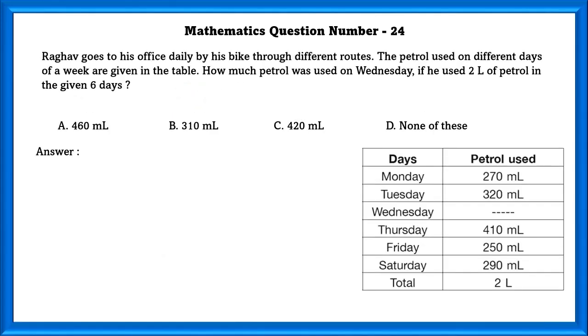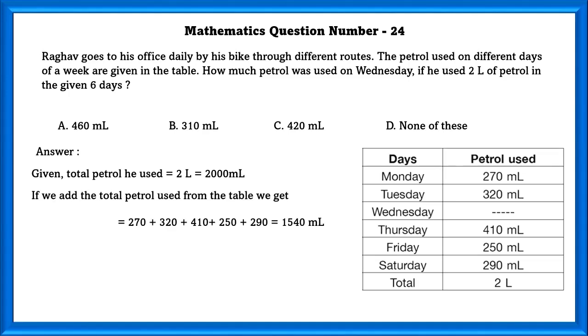Mathematics question number 24. Raghav goes to his office daily by his bike through different routes. The petrol used on different days of a week are given in the table. How much petrol was used on Wednesday if we use 2 litres of petrol in the given 6 days? Given total petrol he used is equal to 2 litres which is equal to 2000 ml. If we add the total petrol leaving Wednesday, we will get 1540. And to find out Wednesday, we have to subtract 1540 from the total petrol used, which is equal to 460 ml. So he spent 460 ml on Wednesday.